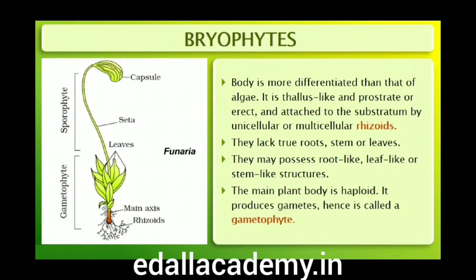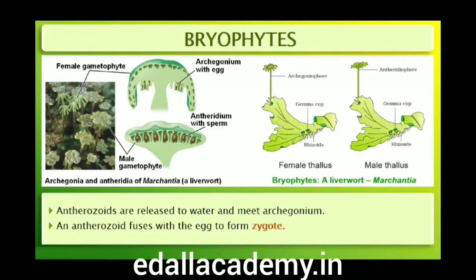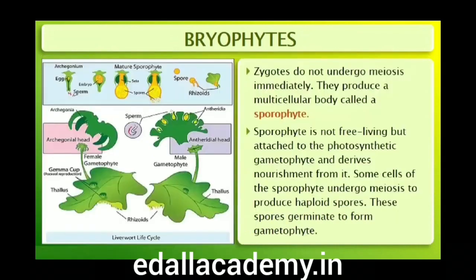The main plant body of the bryophyte is haploid. It produces gametes, and hence is called a gametophyte. The sex organs in bryophytes are multicellular. The male sex organ is called antheridium, which produces biflagellate antherozoids. The female sex organ, called archegonium, is flask-shaped and produces a single egg. The antherozoids are released into water where they come in contact with the archegonium, and an antherozoid fuses with the egg to produce the zygote.